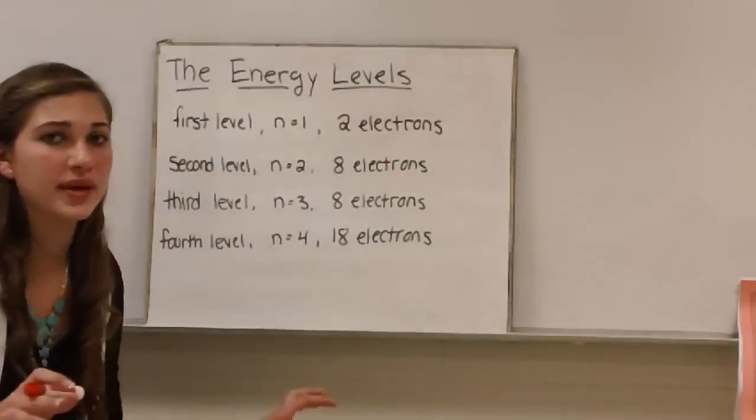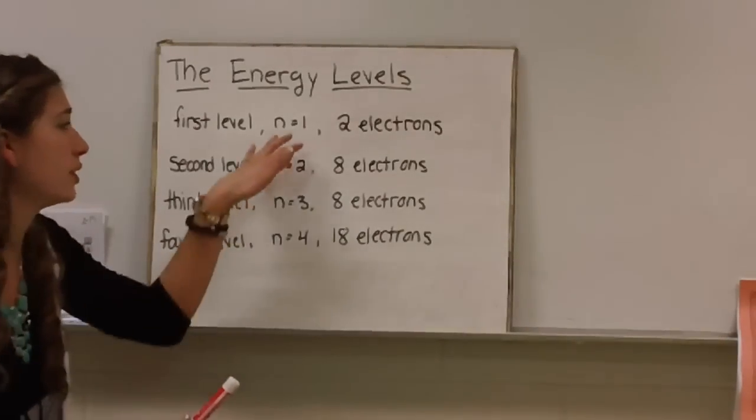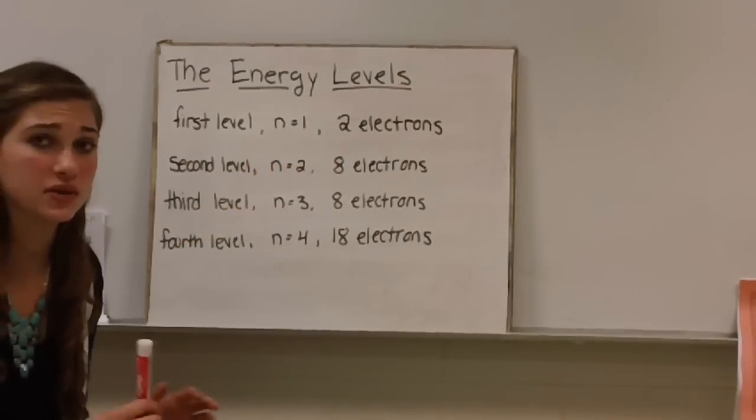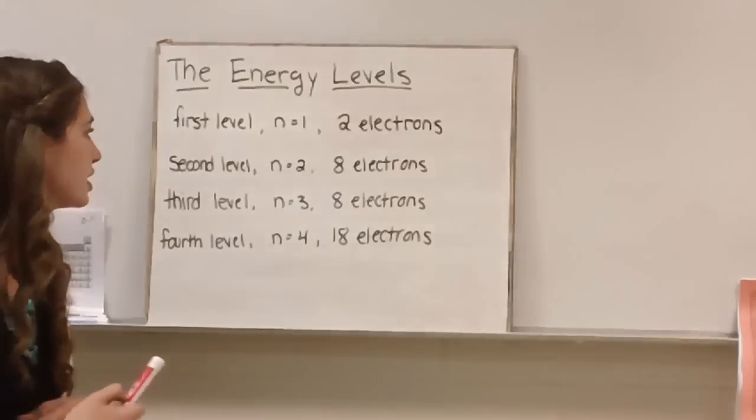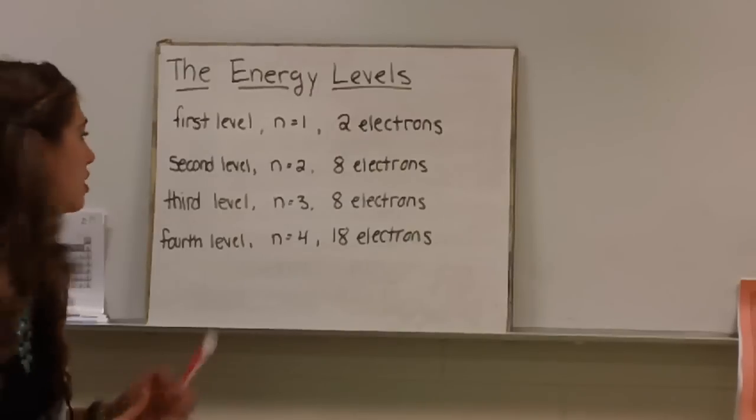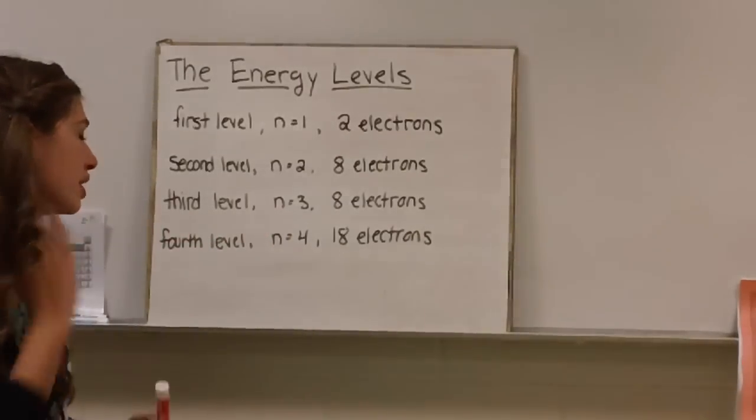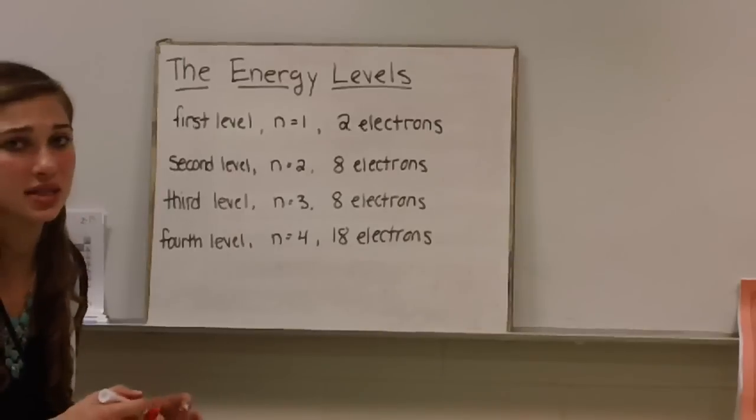We only need to know the basics because this is something we should have learned in the past. Our first level, which could be called N1, contains only two electrons. The next level, N2, can have up to eight electrons. Third level, N3, can also have up to eight electrons. And the fourth level, N4, can have up to 18 electrons.